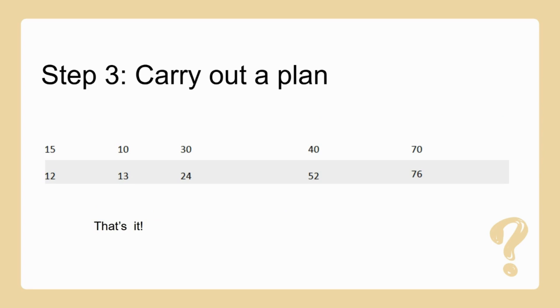If we try 12 chickens and 13 cows, that gives us a total of 76 feet. That is it!